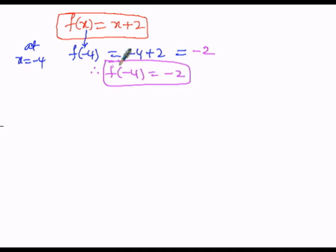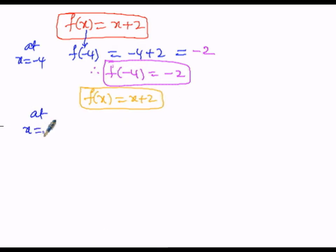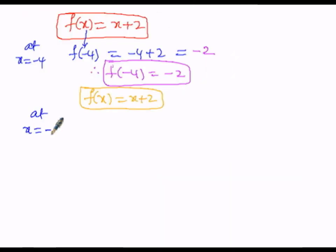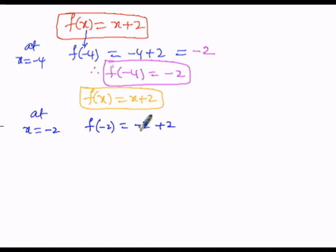For the second case, f(x) equals x plus 2. At x equals minus 2, x is replaced by minus 2, giving minus 2 plus 2. Minus 2 and plus 2 cancel each other, so f(-2) equals 0.